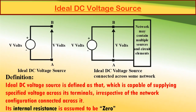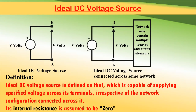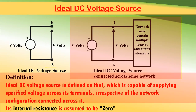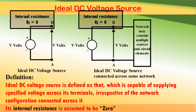First, let us consider the ideal DC voltage source. The ideal DC voltage source is defined as that which is capable of delivering a specified DC voltage across its terminals irrespective of the network configuration connected across it. It is called an ideal source because its internal resistance is assumed to be zero.